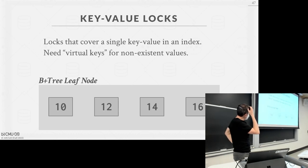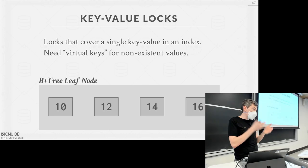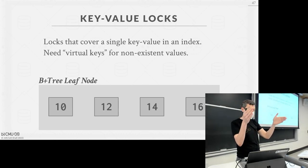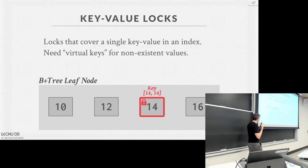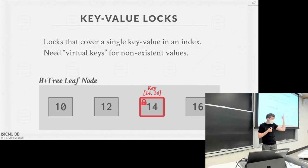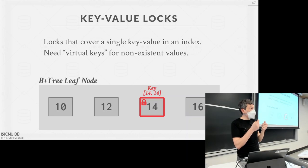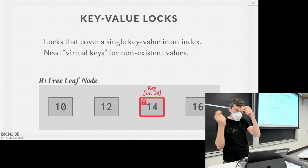With key-value locks, we lock a single value in the index. This allows us to take virtual locks for keys that don't actually exist yet. If someone is scanning a region of data and another transaction tries to insert into that region, even though the value may not exist, the region would be protected by one of these index locks. For example, locking key=14 in a B+ tree — you wouldn't store this in the index itself, you store it in your lock manager as a logical concept, not a latch in the page.